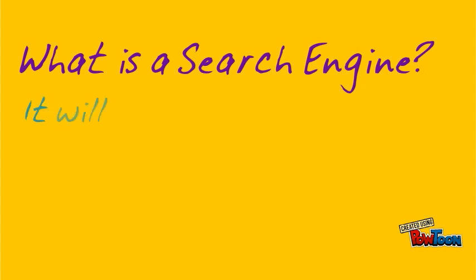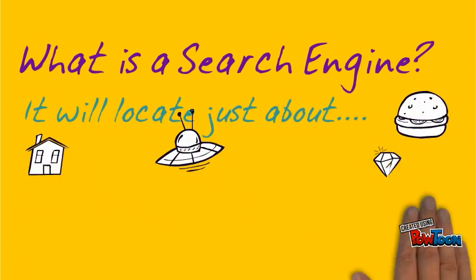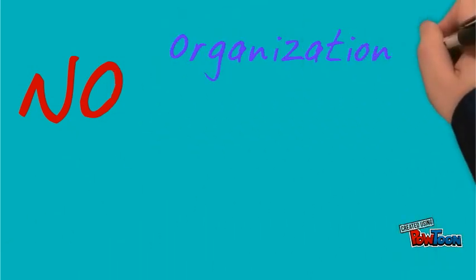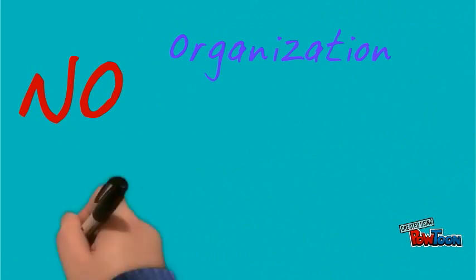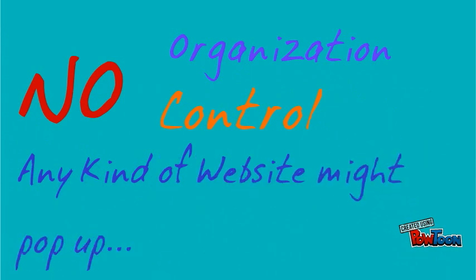A search engine, on the other hand, is a general Internet search tool that will locate pretty much anything on the web. A search engine offers basically no organization of information, no control over the information you'll find. In other words, you might locate any kind of website using a search engine.